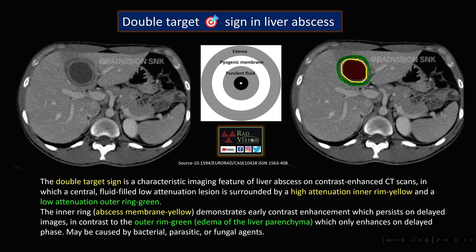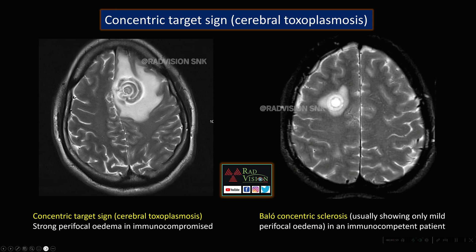The abscess membrane shows early contrast enhancement which persists on delayed images, in contrast to the outer rim — the edema depicted in green — which only enhances on delayed phases. This typical double target sign is seen in liver abscess and can be seen in bacterial, parasitic, or fungal infections.